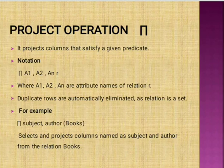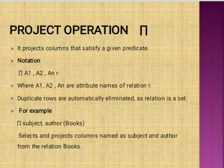For example: projection of subject and author from books. Here, subject and author are both column attribute names in the books relation. Only the subject and author columns are retrieved from the books relation.